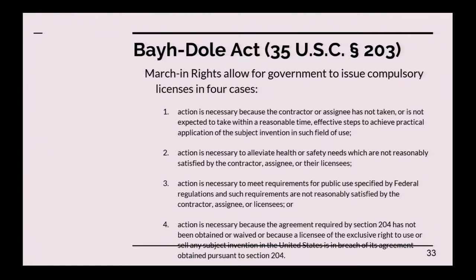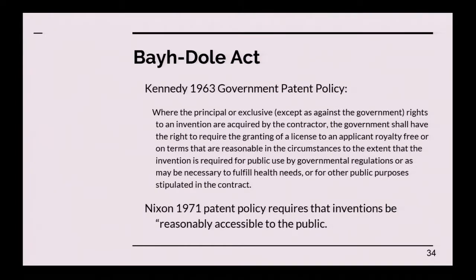Then in 1980 — 30 years later — Congress passed the Bayh-Dole Act, which changed the way the government deals with government-funded research and development. That act contains march-in rights. It follows Kennedy's 1963 government patent policy, which required that where principal or exclusive rights to an invention are held by the contractor, the government shall have the right to require the granting of a license to an applicant, royalty-free, for public use by governmental regulations or as necessary to fulfill public health needs or other public purposes stipulated in the contract. Nixon's 1971 patent policy required that inventions be reasonably accessible to the public.